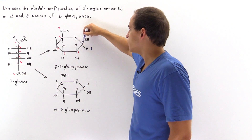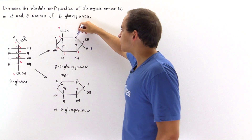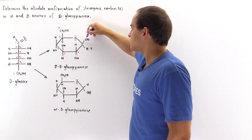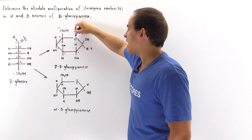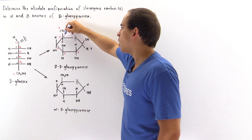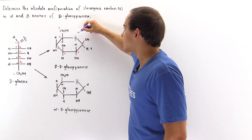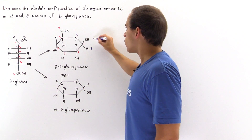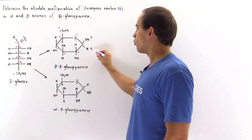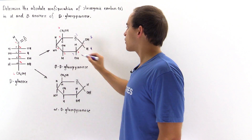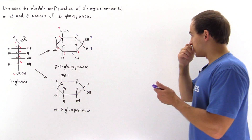So it is either this oxygen or this other oxygen. To determine which one has higher priority, we go to the next atom across. In the first case, we have the oxygen followed by an H. In the second case, we have the oxygen followed by a carbon. Because carbon is heavier than H, this gets priority number one, while the other oxygen gets priority number two. And because the H has priority four, the remaining carbon group must have priority three.